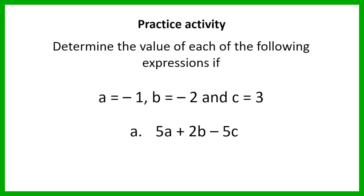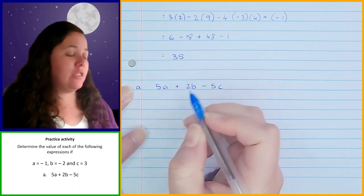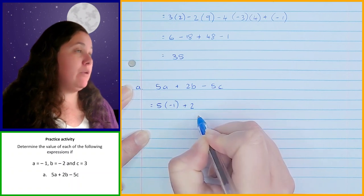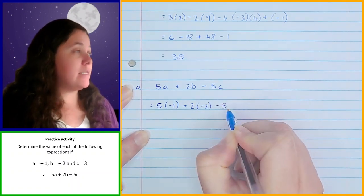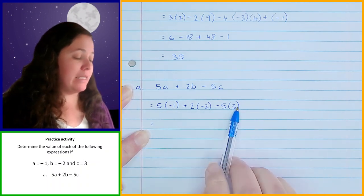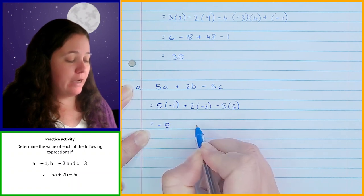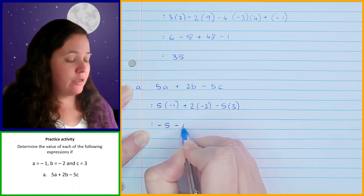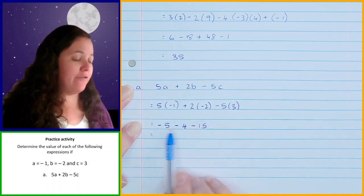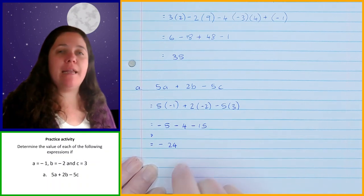Let's go through question A: 5A plus 2B minus 5C. Substituting in: 5 times negative 1 in brackets, plus 2 times negative 2 in brackets, minus 5 times 3 in brackets. There's nothing to do inside brackets and no exponents, so I go straight to multiplication: 5 times negative 1 is negative 5; 2 times negative 2 is negative 4; negative 5 times 3 is negative 15. Then adding: negative 5 minus 4 minus 15 gives negative 24. You should have got negative 24.